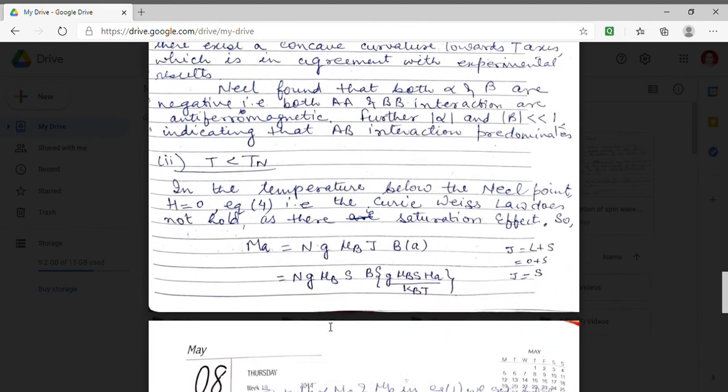Further Neel obtained that dominant interaction is the anti-ferromagnetic AB interaction. That means AA and BB interaction are very small. That means alpha and beta value are very much less than 1.